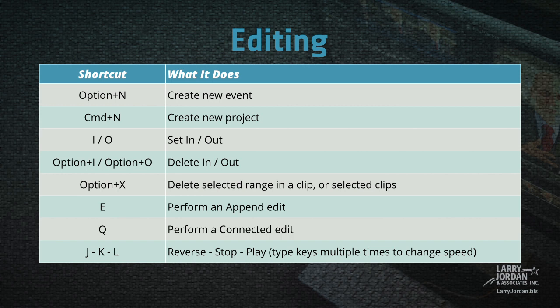When it comes to editing, Option-N creates a new event. Command-N creates a new project. I sets an in. O sets an out. Option-I deletes the in. Option-O deletes the out. Option-X deletes both the in and the out at the same time, or any ranges applied across multiple clips. E performs an append edit. Q performs a connected edit. And the J-K-L keys reverse, stop and play. If you type the keys multiple times, the speed that you go backwards or forwards changes.